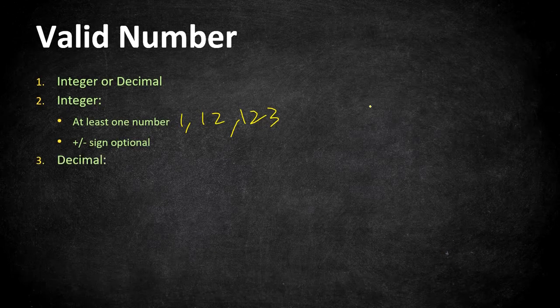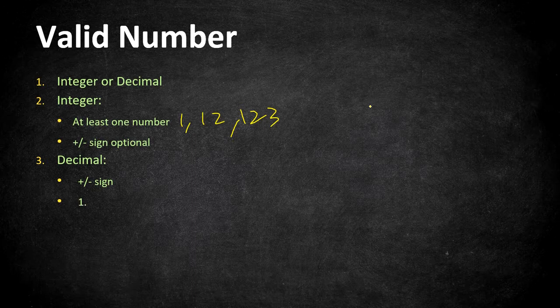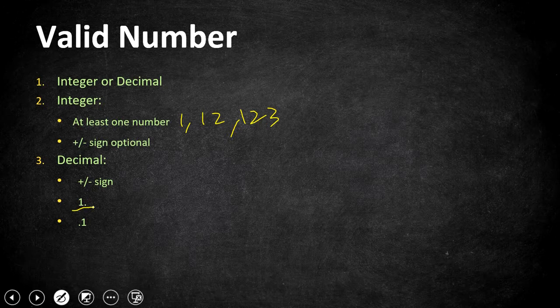Moving on to a decimal number: a plus or minus sign is also optional. A dot should be followed by at least one number, or a number can be followed by a dot — either dot followed by number or number followed by dot. It is not necessary to have a number on both sides of the dot.